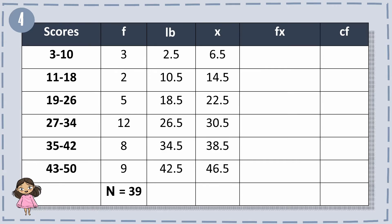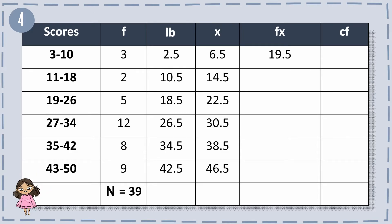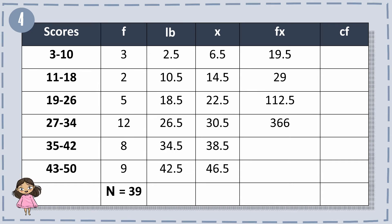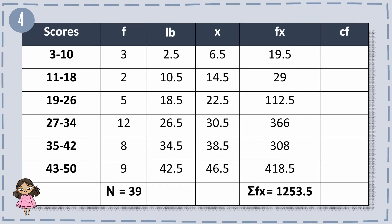For fx: 3 times 6.5 equals 19.5, 2 times 14.5 equals 29, and so on. The summation of fx is 1,253.5. For cf, we have 3, 5, 10, 22, 30, and 39, which matches the total frequencies.